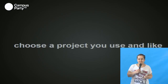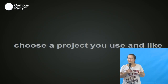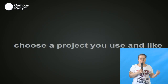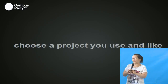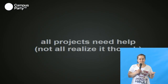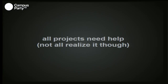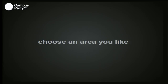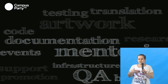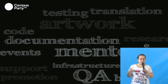No matter which of these two main ways you go, the most important part is: choose a project. You need to choose a project you want to work with, and it's always good to choose one that you like and that you use, because this is where you see problems you can work on and where you enjoy working on it. All of these projects need your help, though not all of them might realize it yet. Once you have your project, choose an area you like. There's so much you can help with in free software — that's not just coding. If you are a coder, fine, do code. If not, there's a lot of other stuff you can do as well, like documentation, translation, you can help organize events, you can do artwork, all kinds of things.